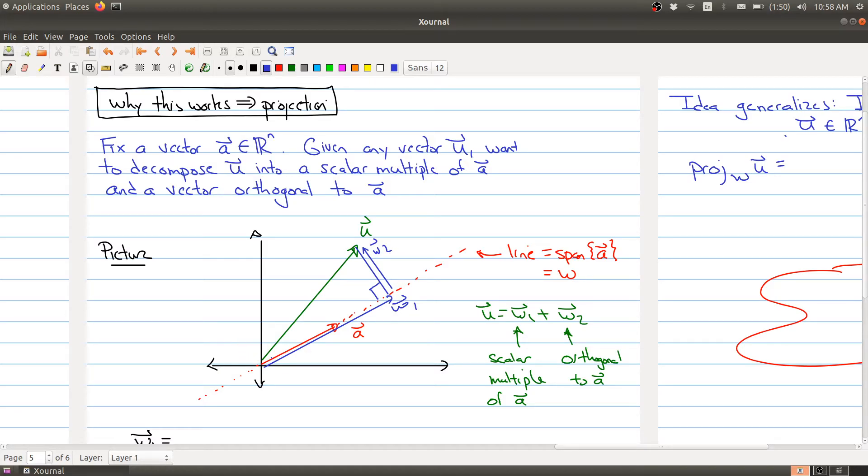Normally we would have written w2 down here, but I've kind of added two vectors together. So we want to decompose u into those two pieces, and we want to give names to each of these pieces.